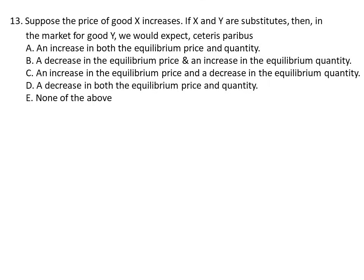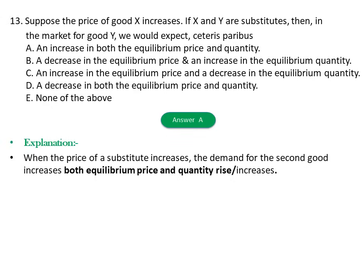Question thirteen: Suppose the price of good X increases. If X and Y are substitutes, then in the market for good Y we would expect: A) An increase in both equilibrium price and quantity, B) Decrease in price and increase in quantity, C) Increase in price and decrease in quantity, D) Decrease in both price and quantity. The answer is A. Explanation: When the price of substitute X increases, demand for good Y increases, raising both equilibrium price and quantity.